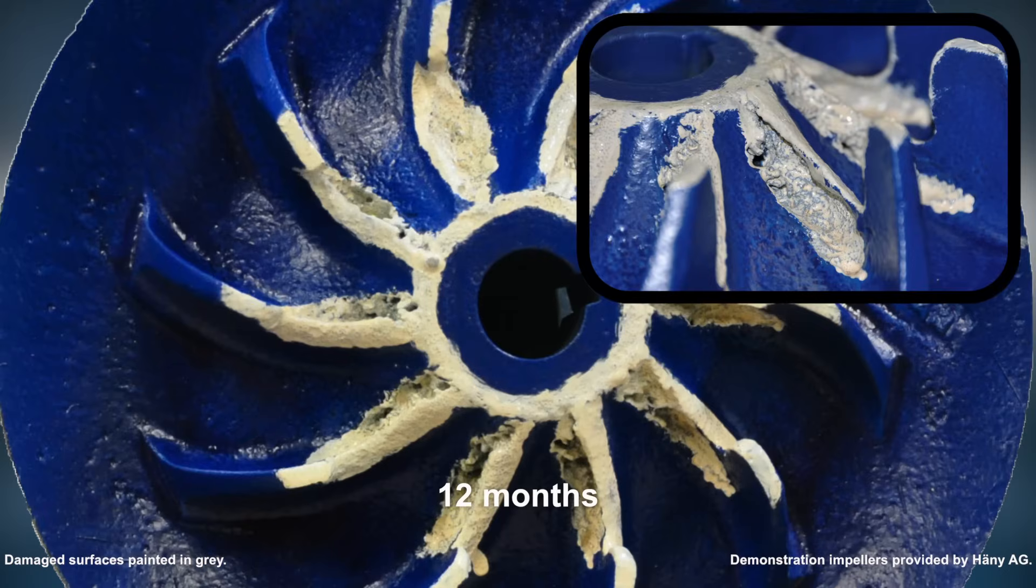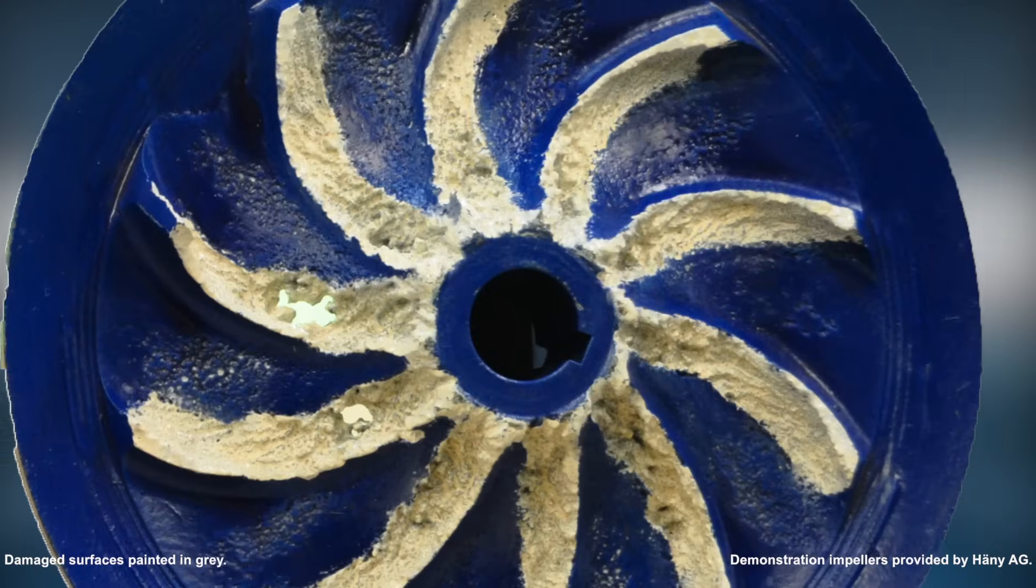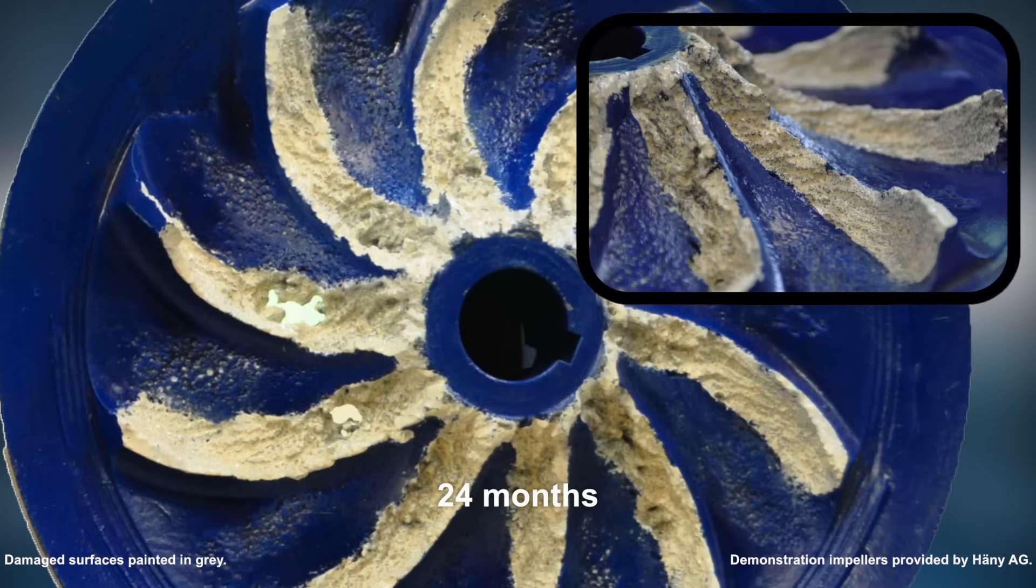After a year of operation under cavitation, the damaged geometry has a different shape and therefore the flow has a different pattern. The collapsing cavitation bubbles cause material break-off at the top edge of the blades. After 2 years, the blades have been eroded completely, which makes it impossible for the pump to function.